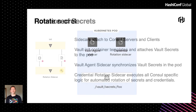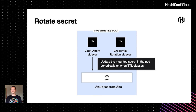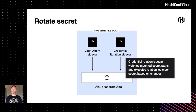The Vault agent sidecar updates secrets in the pods periodically, pulling from Vault on a schedule, and has logic to determine when you're getting close to expiration on a certificate, reissuing those certificates when they're about to expire, resulting in the files being updated inside the pod. The credential rotation sidecar watches these mounted secrets for changes, and when a file changes, it executes rotation logic based on that secret type.